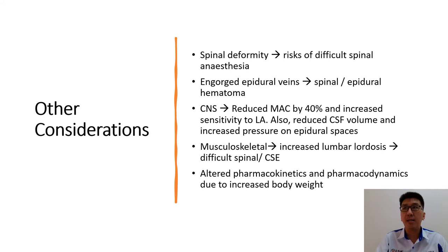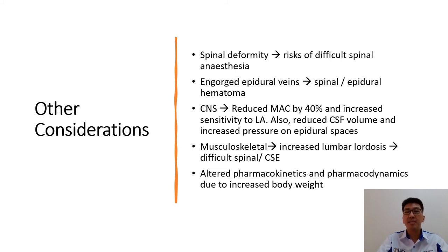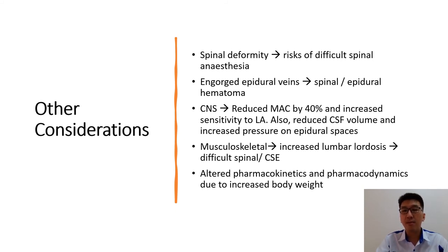Therefore, the mother will be at risk of awareness. Because of the increased gravid uterus, there will be a reduction in CSF, the cerebrospinal fluid volume across the spine, especially at the epidural space. Therefore, there will be increased pressure at these spaces, and the risk of total or high spinal anesthesia will require urgent resuscitative methods should the patient develop sympathectomy, presenting as hypotension and bradycardia.